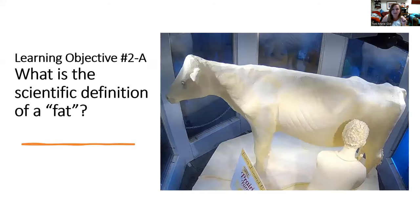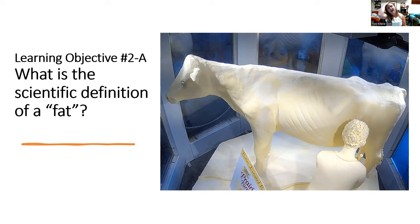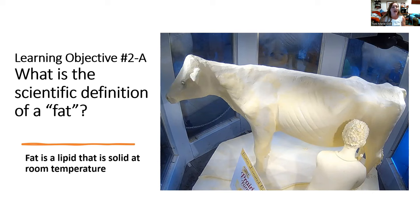Moving on to learning objective two: where it says 'total fats' on the nutrition facts panel, it's technically 'total lipids.' To complicate matters, fat has its own very specific definition in food science and human nutrition — fat is a lipid or a triglyceride that is solid at room temperature.